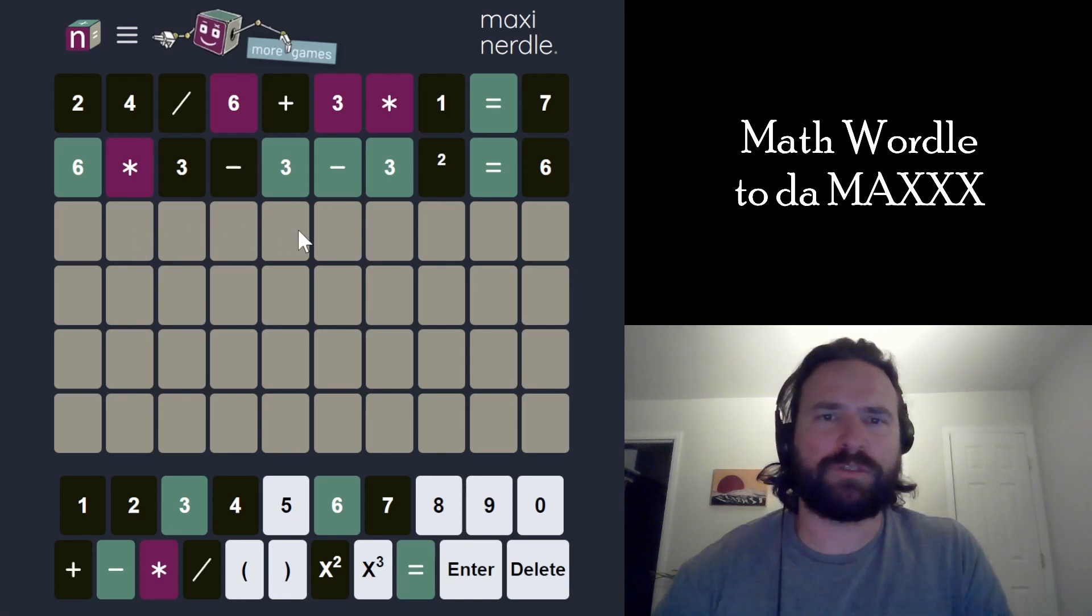What is the structure of this? I can't be multiplying two double-digit numbers here. That's not possible. It's got to be parentheses. Yeah. Oh, it just equals zero.